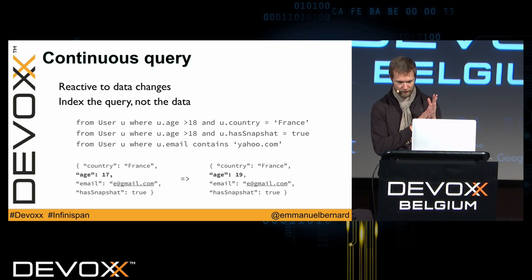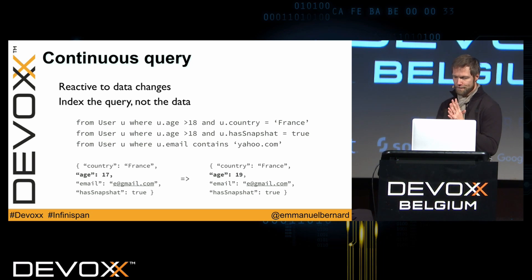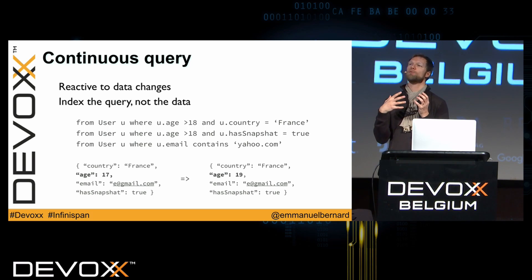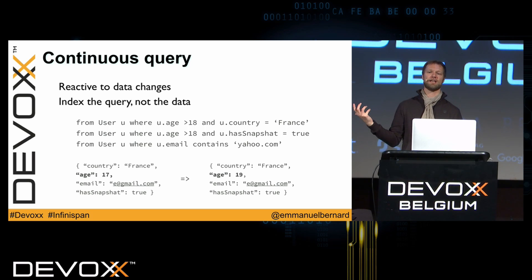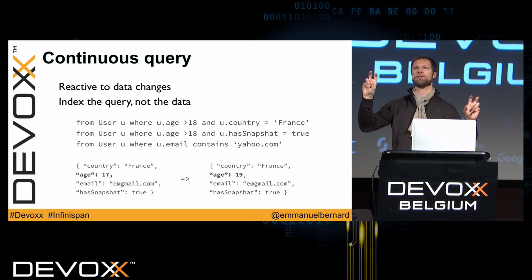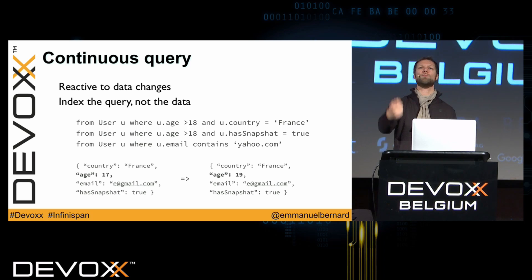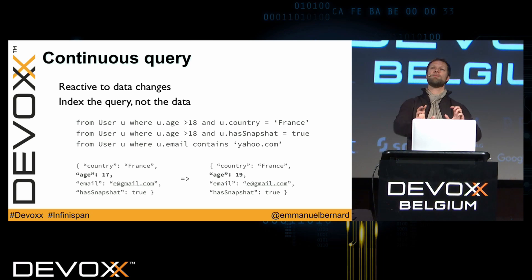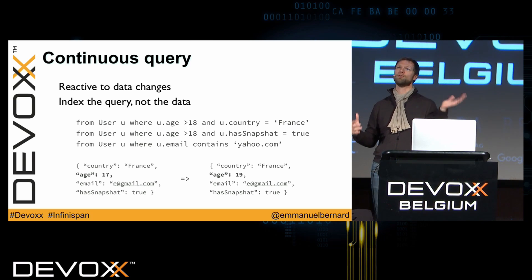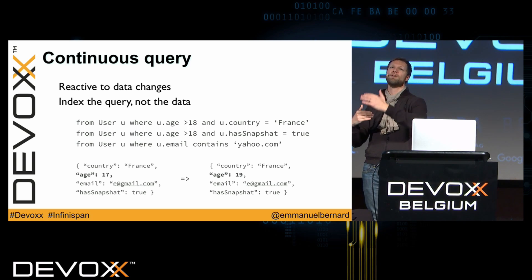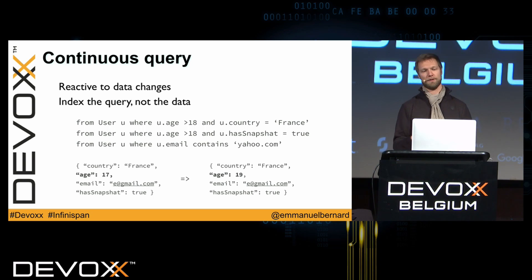Continuous queries are one of my favorites. A lot of systems try to keep dashboards fresh by re-running queries every 30 or 60 seconds — that's pretty inefficient. Continuous queries solve this by saying: here's the query I'm interested in, and every time a new element matches or no longer matches, please notify me, so I can update my list on the fly and be reactive instead of polling and consuming resources.